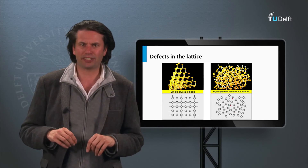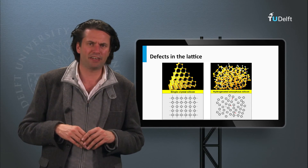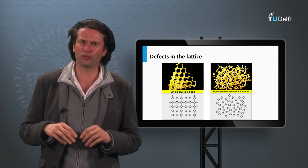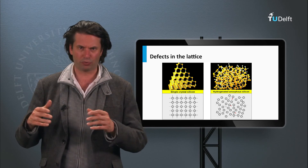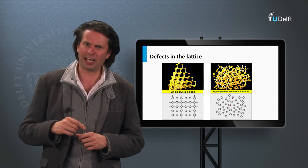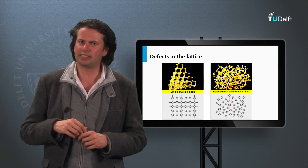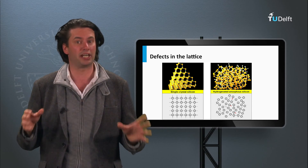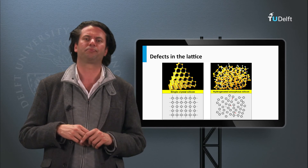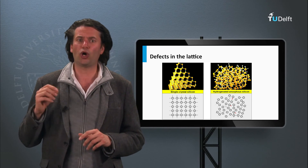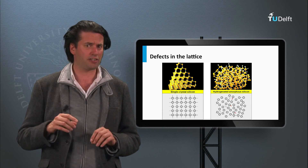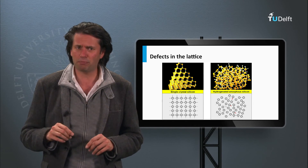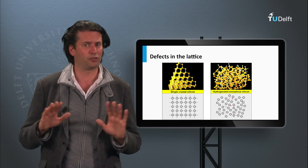Hydrogenated amorphous and nanocrystalline silicon films have a relatively high defect density compared to crystalline silicon. Due to the disordered structure, not all valence electrons are able to make bonds with neighboring atoms — the so-called dangling bonds act as defects. This means the lifetime of light-excited charge carriers is limited by Shockley-Read-Hall recombination, which controls the diffusion length. The recombination is so high that the diffusion length in hydrogenated amorphous silicon is only 100 to 300 nm.